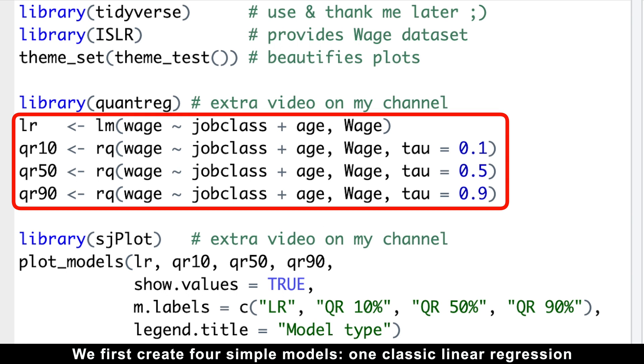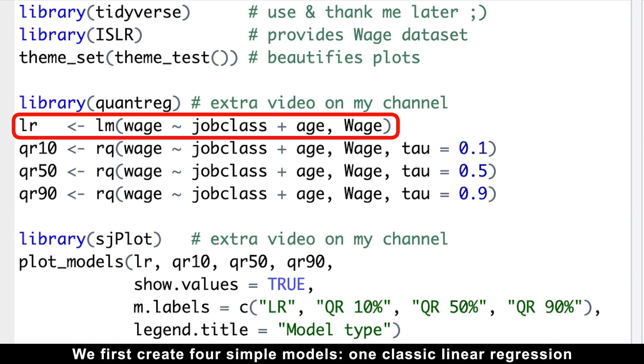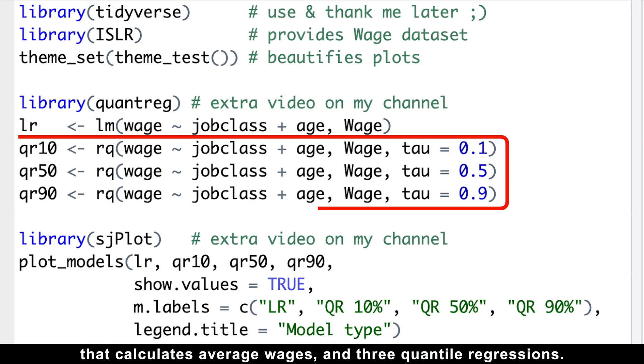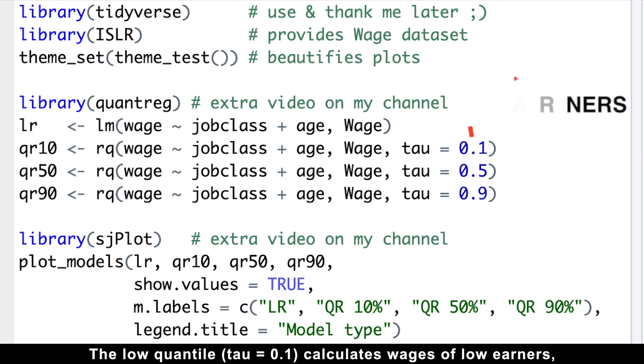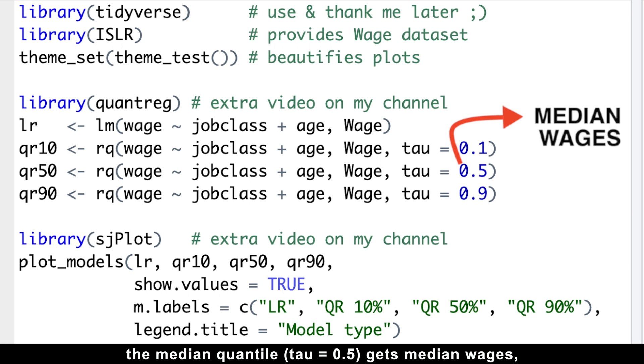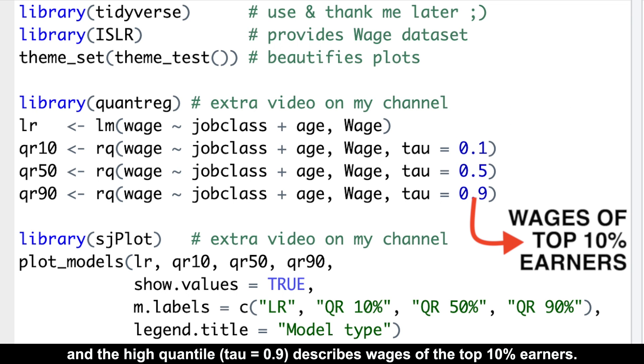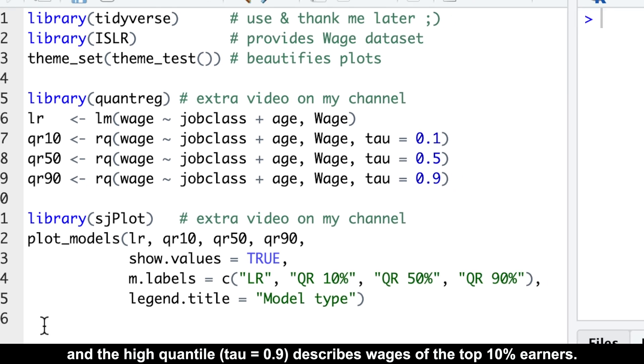We first create four simple models, one classic linear regression that calculates average wages, and three quantile regressions. The low quantile calculates wages of low earners, the median quantile gets median wages, and the high quantile describes wages of the top 10% earners.